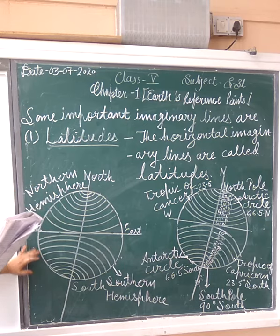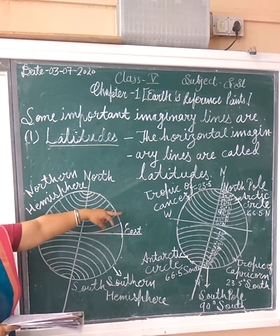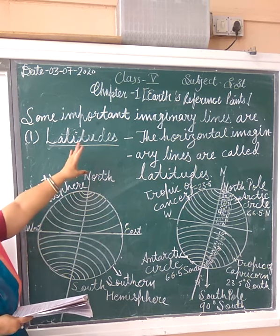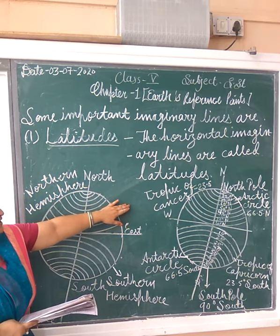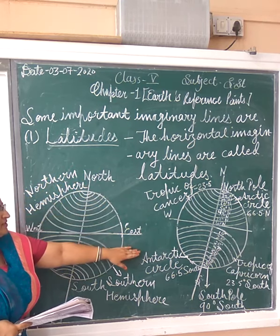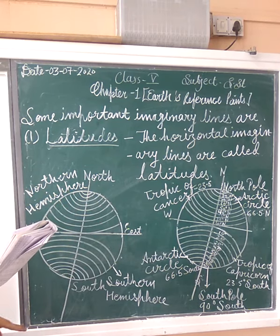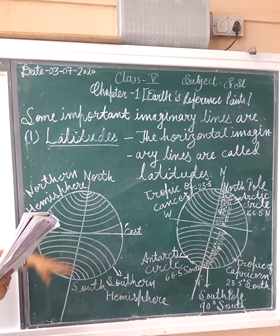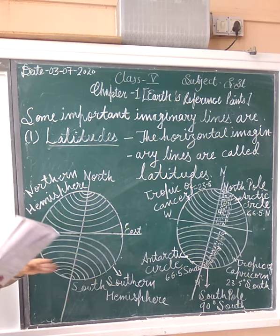Latitudes in the northern hemisphere are 10, 20, 30, 40, 50, 60, 70 degrees and so on, up to 90 degrees. Latitudes in the southern hemisphere are the same — 10 to 90 degrees.